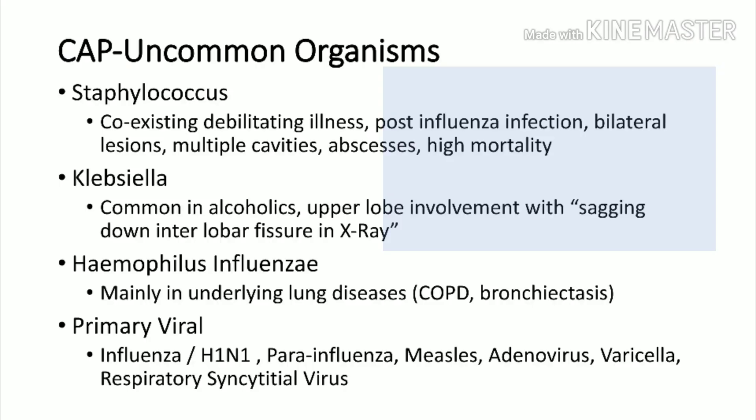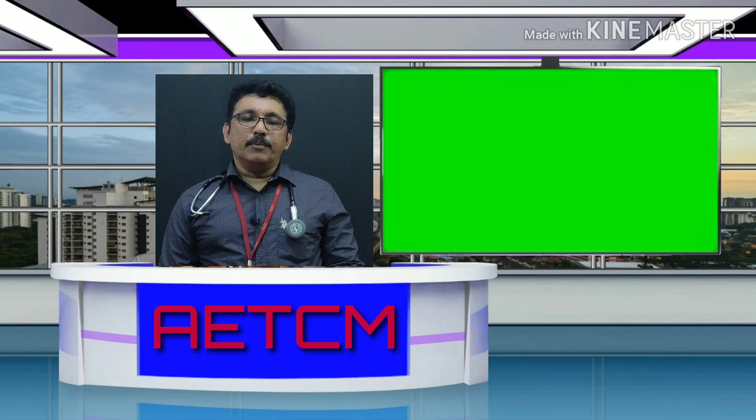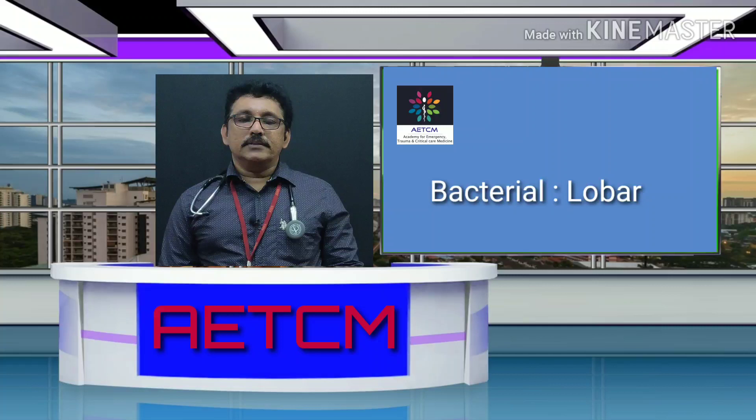Uncommon organisms causing community acquired pneumonia include Klebsiella and Staphylococcus. Klebsiella is very common in alcoholic patients and has a predilection towards upper lobe involvement. Haemophilus influenzae is another organism. Viral pneumonias are very common nowadays — H1N1 is one virus which can present with community acquired pneumonia.